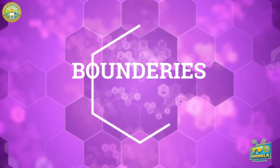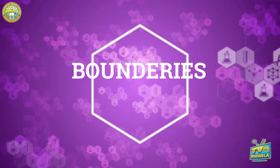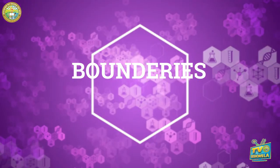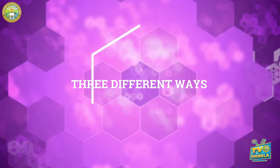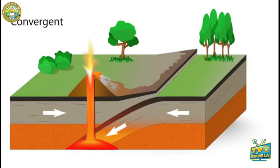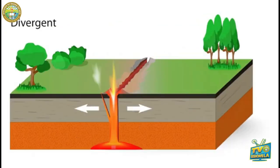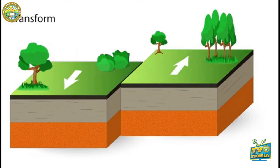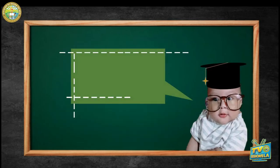Plates interact or meet at boundaries. They interact in three different ways: convergent, divergent, and transform fault boundary.